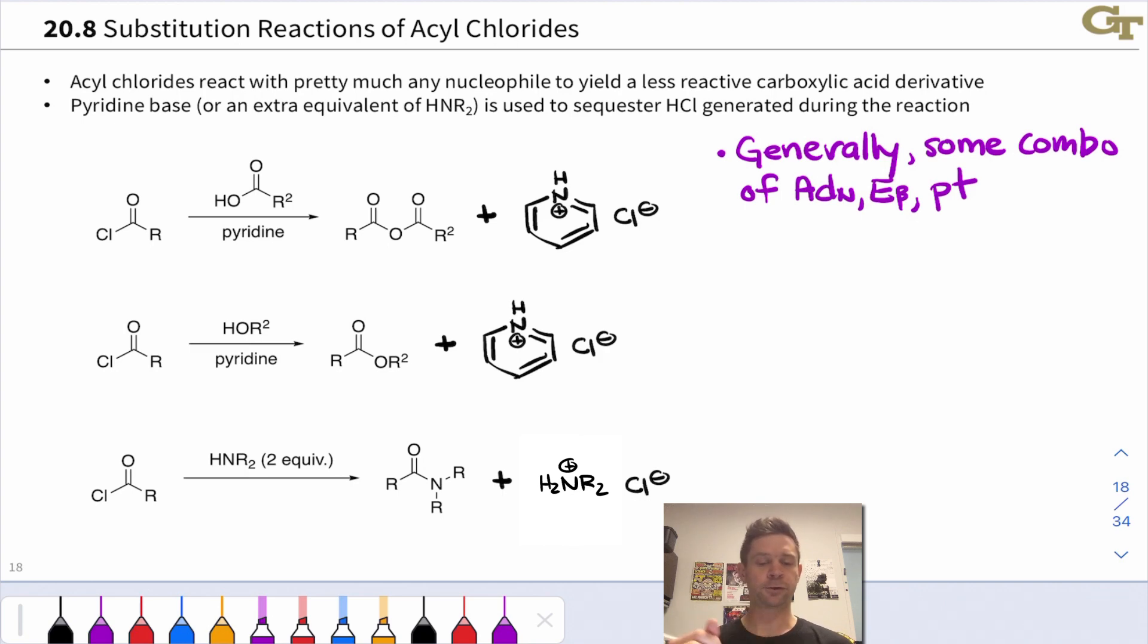In the first reaction we're taking an acyl chloride and treating it with a carboxylic acid which is nucleophilic at these carboxyl oxygens. The resulting product is an anhydride and this occurs via nucleophilic substitution by the carboxyl or carboxylate oxygen built into the carboxylic acid. Anhydrides can be made favorably from acyl chlorides.